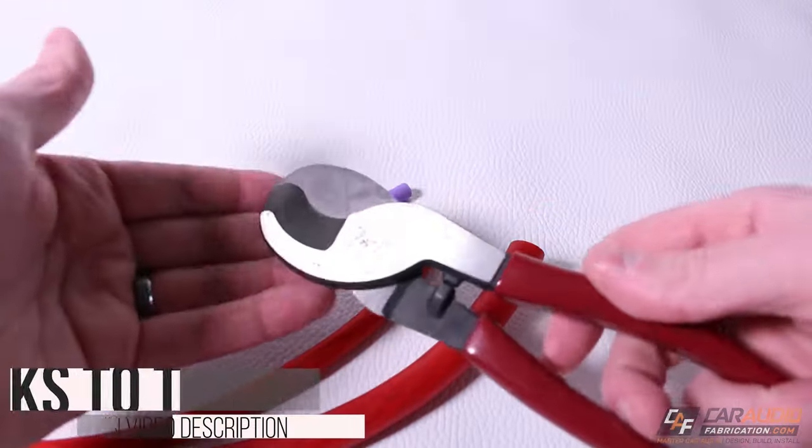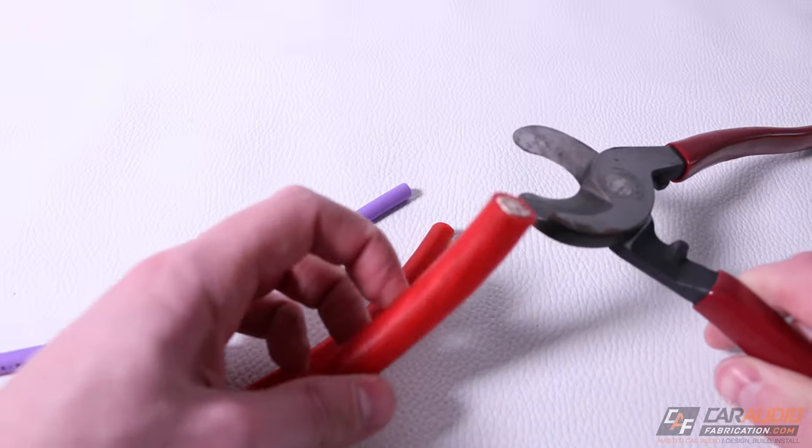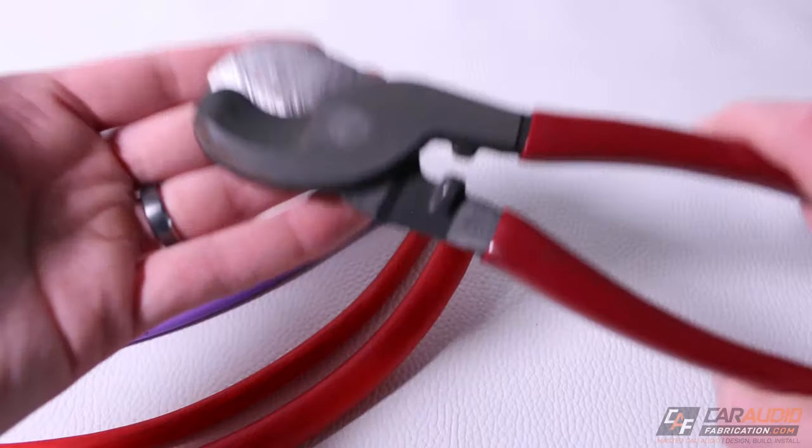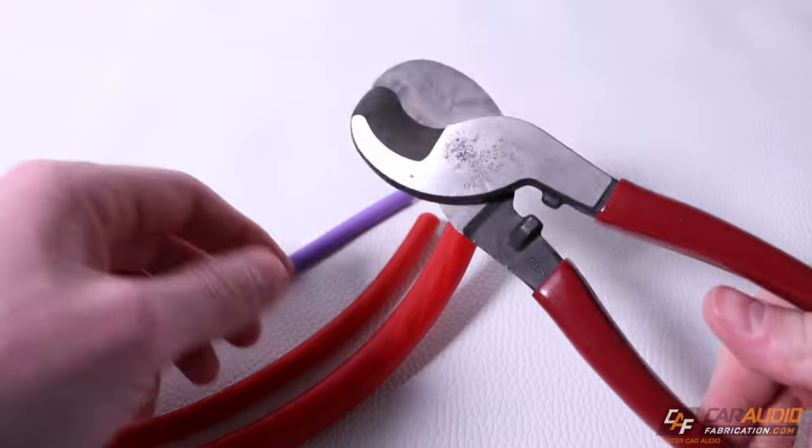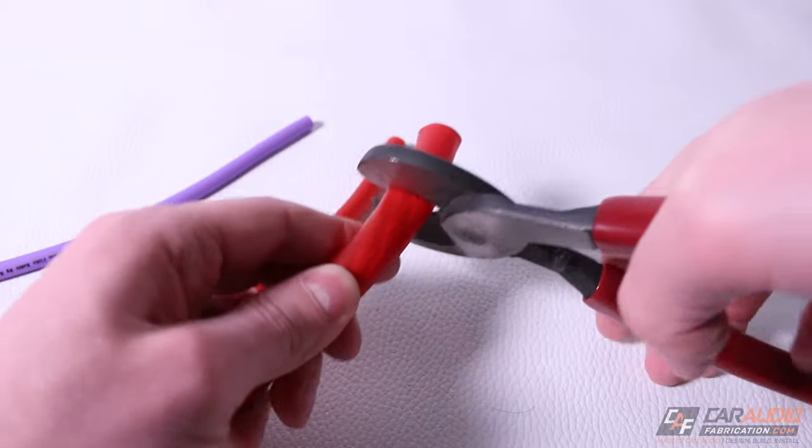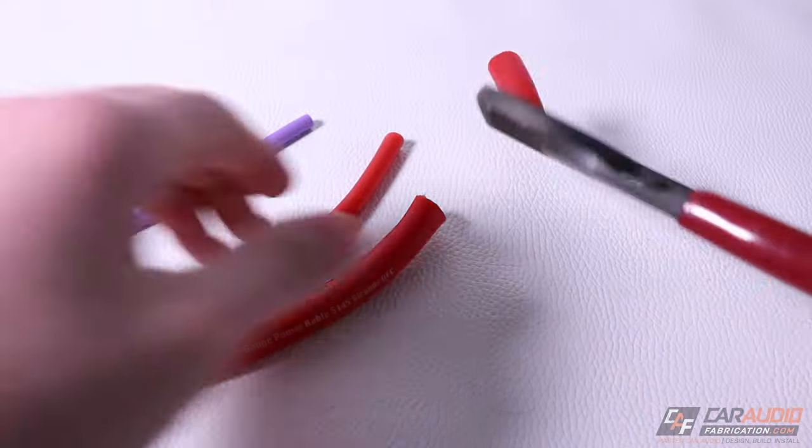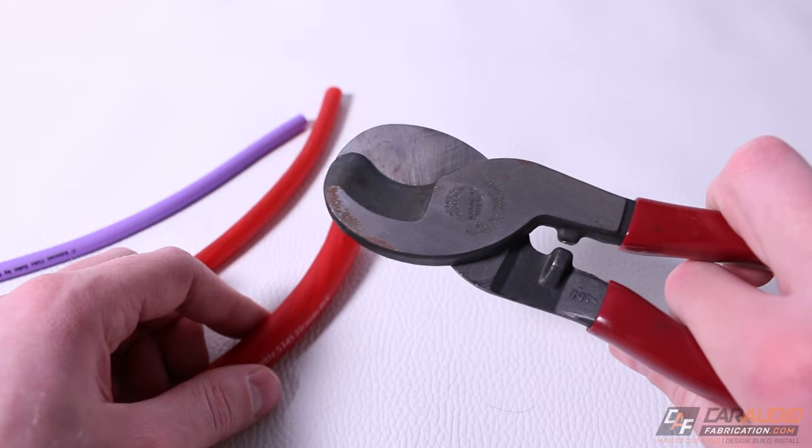The first traditional method I've seen used is cable cutters like this to strip away that large insulation. This is a nice set of Klein cable cutters. These work extremely well for cutting large cable, but that is what these are designed to do.